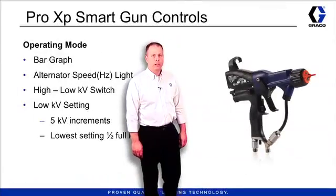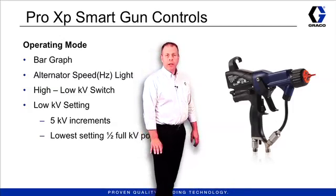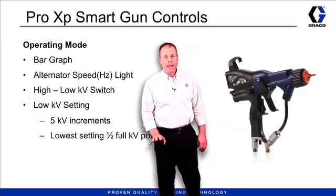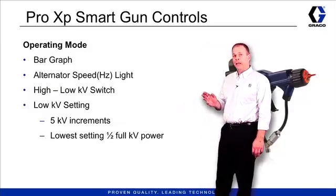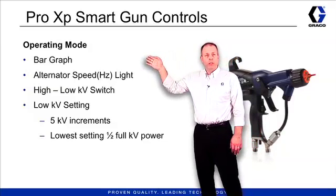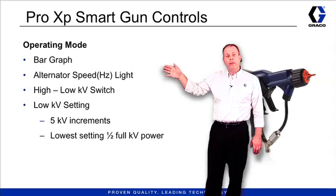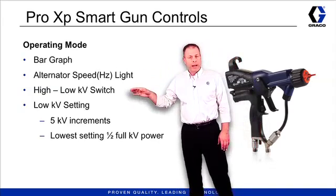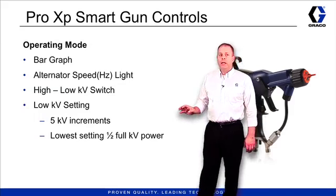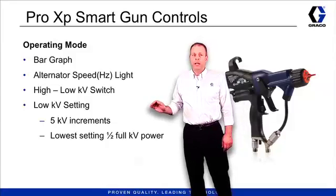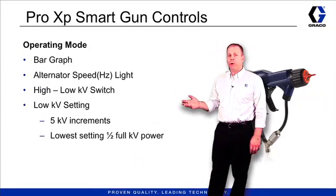So far we've been talking about the Pro XP standard gun, and now we're going to spend time talking about the Pro XP smart gun. The smart gun has the same four controls for fluid and air on the handle, but then it's got the smart display on it as well. Some of the things displayed on that display is a bar graph telling you what the voltage output is. It also has the alternator speed light just like the standard model. But then we have a high low KV switch, and the low KV settings. The low KV setting allows you to set a different voltage on that low setting by increments of five, with the lowest setting being half of what the full KV power potential of that gun is.